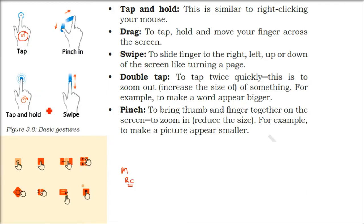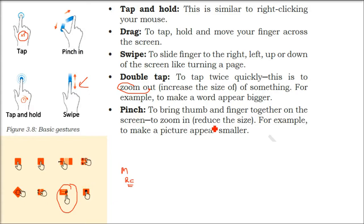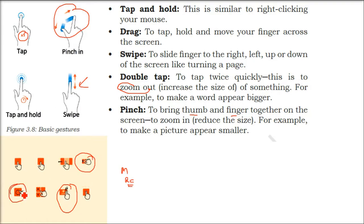Swipe is to slide your finger to the right, left, up, or down on the screen — just like turning the page. Double Tap means tapping twice very quickly with your finger. Unlike a mouse double-click, on a mobile it is equivalent to zooming in — it increases the size. For example, double-tapping a word document will make the text appear bigger. Pinch is like taking a pinch of something — you bring your thumb and finger together to zoom in or zoom out, making a picture smaller or bigger. These are the basic gestures; other gestures exist, and some companies provide additional gestures to enhance user experience.